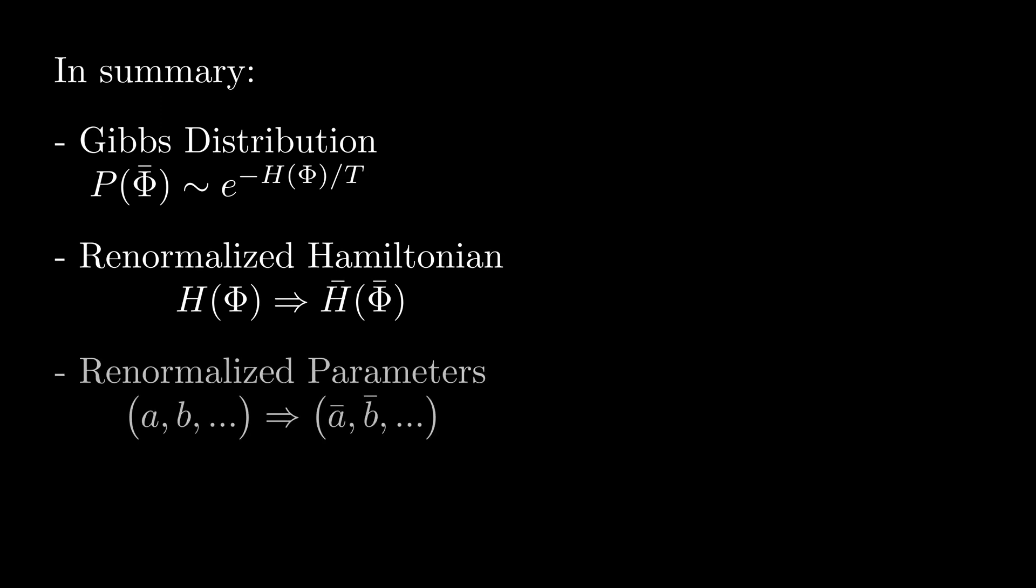So, to summarize, we defined how to describe the probability of a thermodynamic system being in a particular state in terms of the energy of that state and the temperature. We worked out how to average out the smallest scale of our system, and how this changes our system's parameters. We saw that repeatedly rescaling our system in this way induces a flow in parameter space.